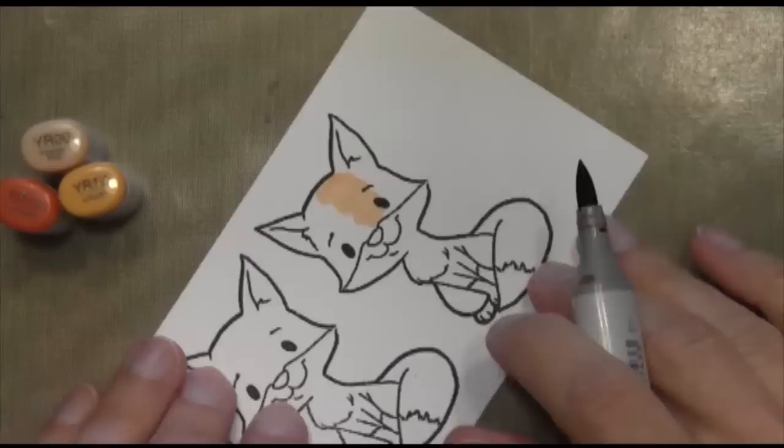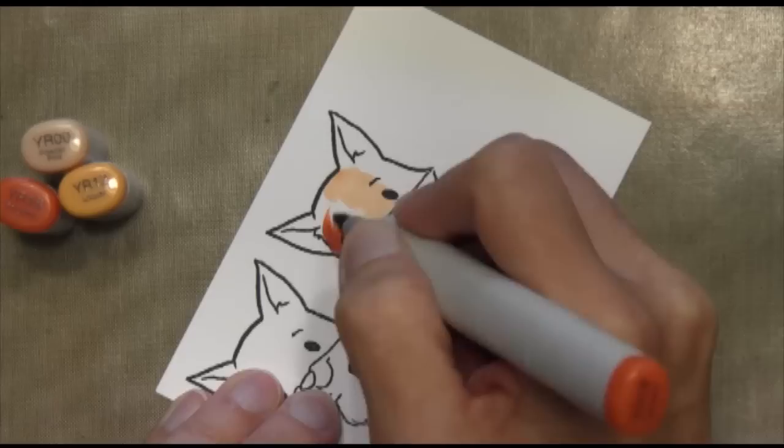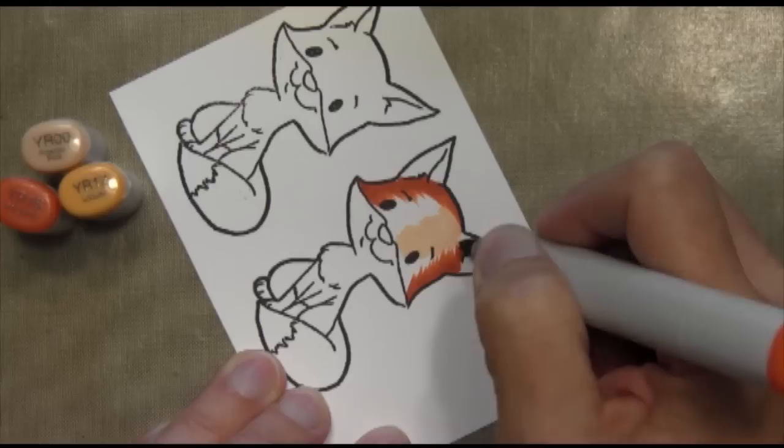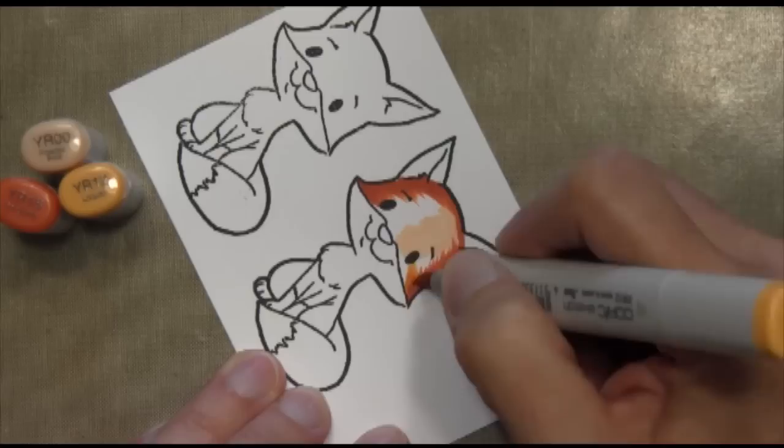Here I am coloring my fox. I started off with my lightest color, which is the YR00, and I created my highlight. Now I'm coloring with the darkest, which is YR18. I'm kind of flicking my pen upward. So I flip my paper over so that I'm always going in the upper direction, just because I find it easier to go up than down. It's kind of making it look like a fur sort of texture.